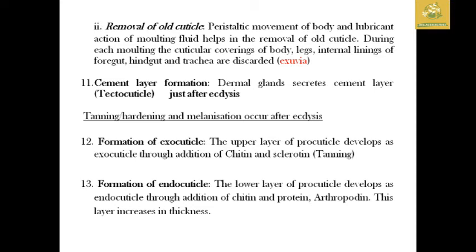In the ecdysis process, the upper procuticle is formed — that is the exocuticle, containing chitin, sclerotin, and tanned protein. The endocuticle is also developed and this layer is thick.